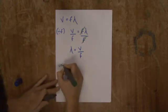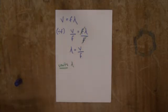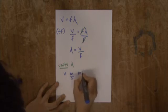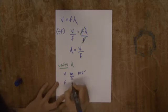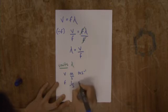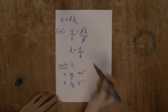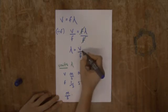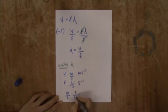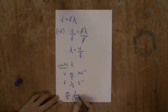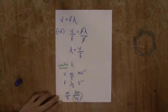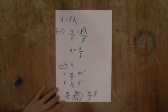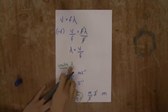To work out the units of wavelength, lambda: the units of speed are metres per second, and the units of frequency are one over seconds. So we have metres per second divided by one over second — that's metres per second multiplied by second. The seconds cancel out, and we're left with metres, which is a unit of length — exactly what we'd expect for a wavelength.